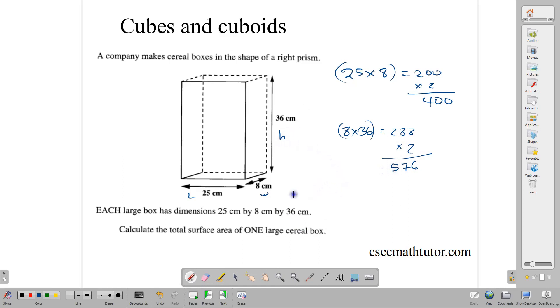And then finally, we have the rectangle at the front, this big one, that's 25 by 36. So 25 times 36 gives us 900. And so we multiply that 900 by 2, and that gives us 1,800. And now our total surface area is simply to add those numbers together.